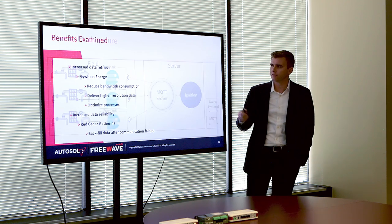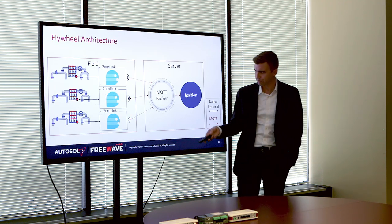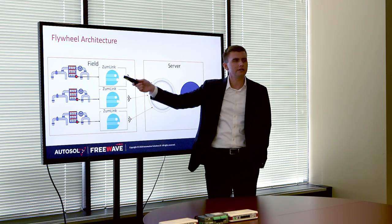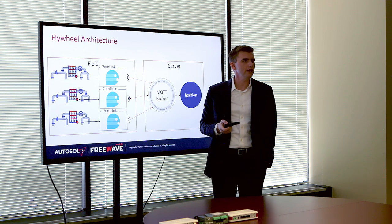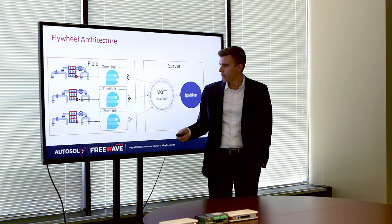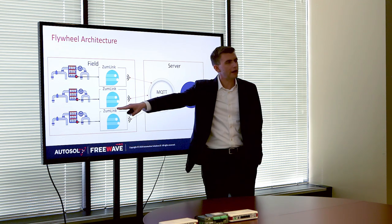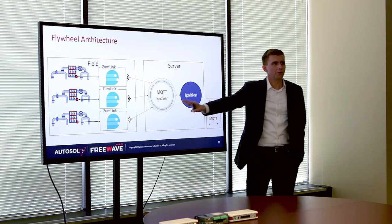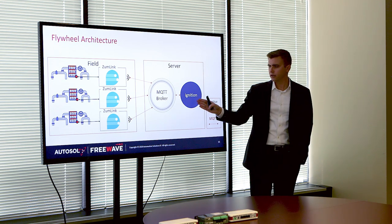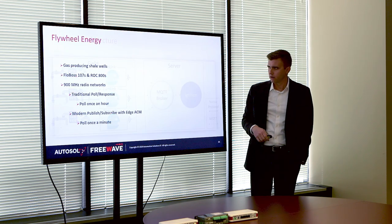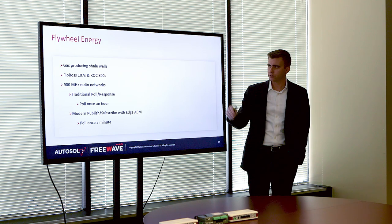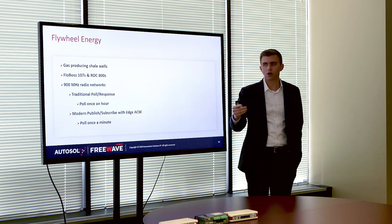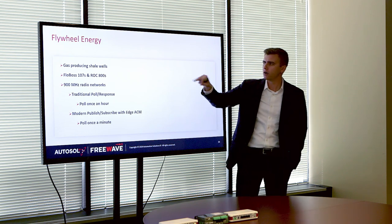This is Flywheel's architecture. They have ROCs out in the field and are replacing their radios with ZoomLinks with Edge ACM already installed on them. Edge ACM is pulling thousands of tags on each ROC, publishing via MQTT to a broker where it's being natively consumed via MQTT SparkplugB in their Ignition HMI. They have gas-producing wells with two types of devices that have plunger lifts: FlowBoss 107s and ROC 800s, about half of which are serial.